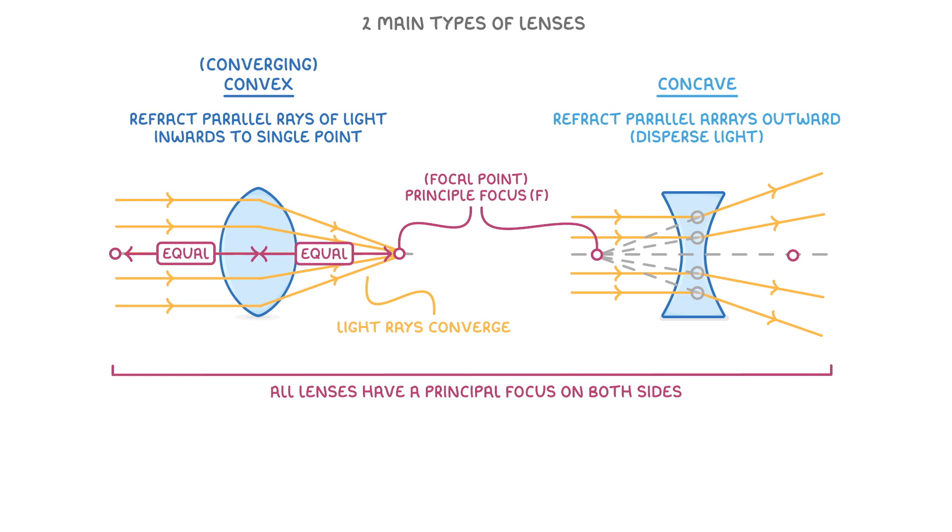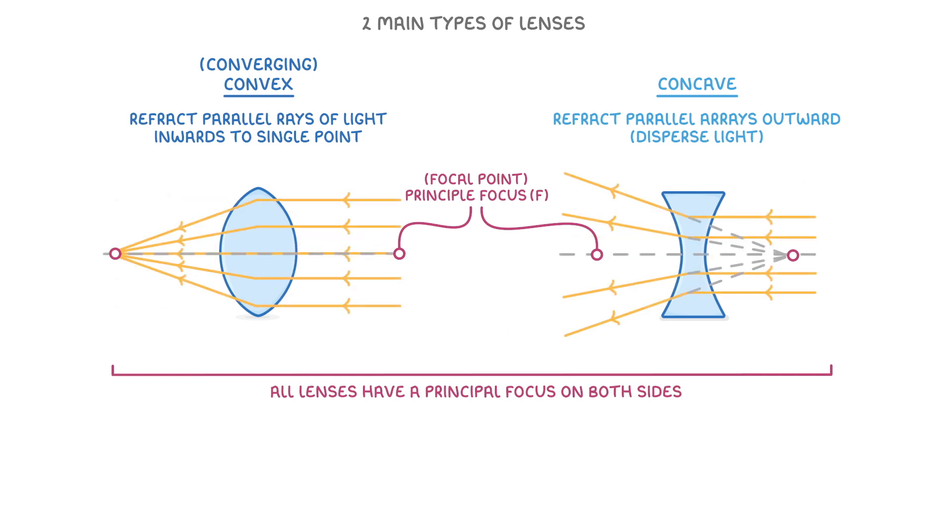Because they have a principal focus on both sides, lenses are basically symmetrical and can work both ways. So if we were to reverse the direction of the light, so that it's travelling from right to left, everything basically flips, and the light focuses on the opposite side of the lens.